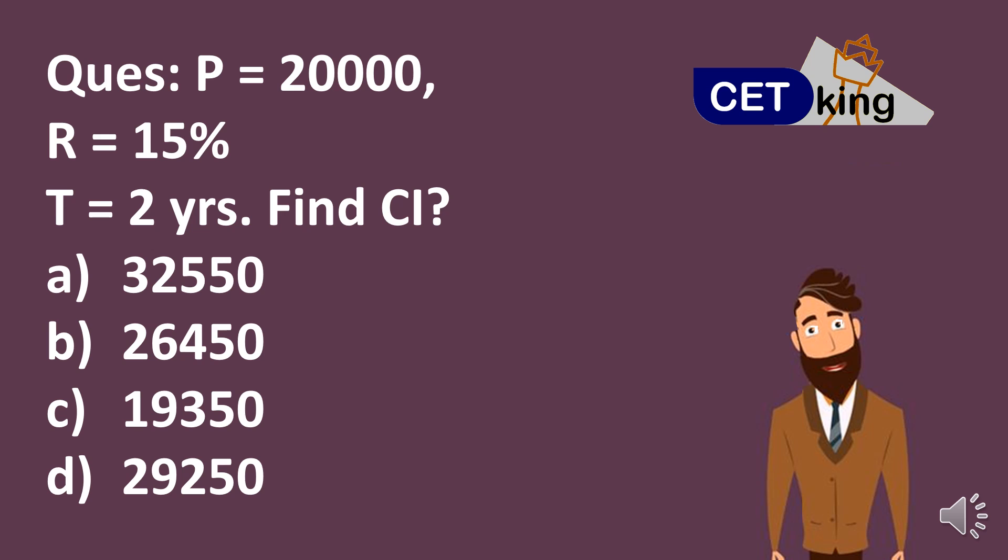So P into 1 plus R by 100 whole to the power N minus P is the normal formula for compound interest which I can use to solve this question here. I don't need to waste my time on that because you already know that formula. And if you teach that formula, you can go home.